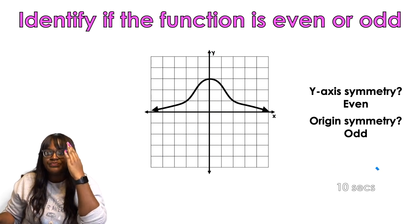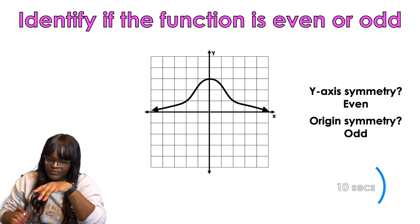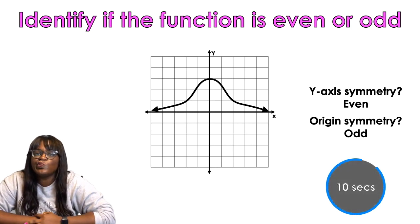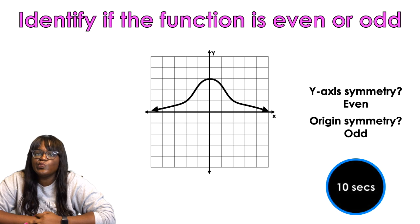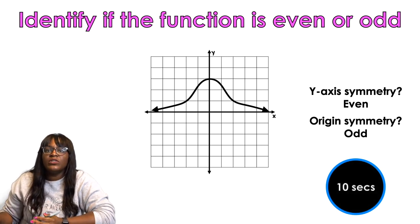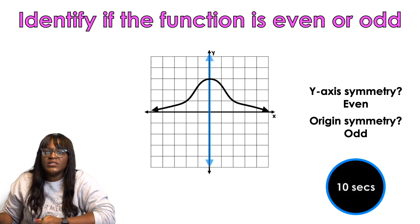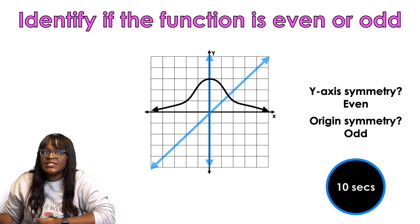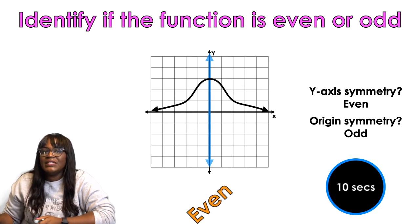We're going to draw the y-axis. We're looking good, right? And then we're going to do the origin symmetry line, y equals x. What we got going on? That is going to be even.